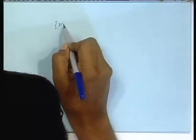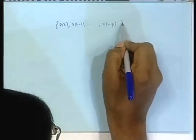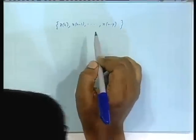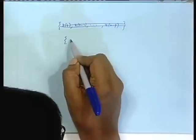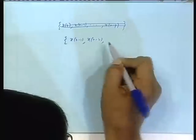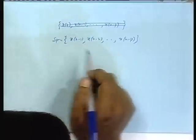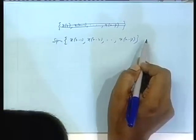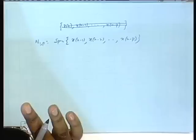Just a quick recap. What we were doing yesterday: we considered the space spanned by x_n to x_{n-p}, or more generally, with x_{n-minus-p-minus-1} towards the right. We call this space W_{1,p}.